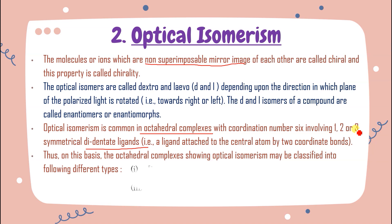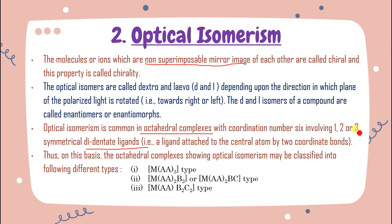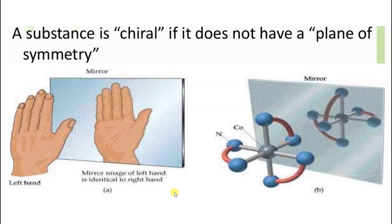Octahedral complexes showing optical isomerism may be classified into the following types: MA₃ type — only three bidentate ligands, no monodentate ligands; MAA₂B₂ type — two bidentate ligands and two monodentate ligands; and MAA₂B₂B₂ type — at least one bidentate ligand must be present to show optical isomerism.